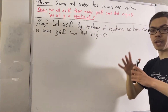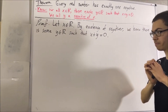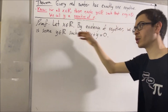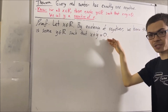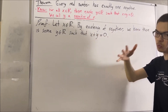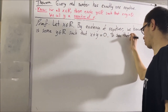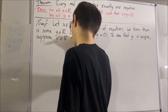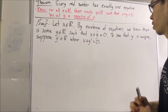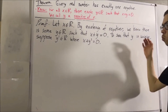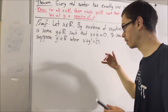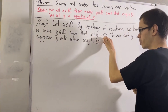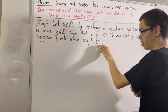That is a way that we can prove uniqueness. So, let's give ourselves an arbitrary real number that satisfies this condition — call it y prime. Now, our goal from here is to deduce that y is equal to y prime. Notice we have that x plus y is equal to zero, and x plus y prime is equal to zero.